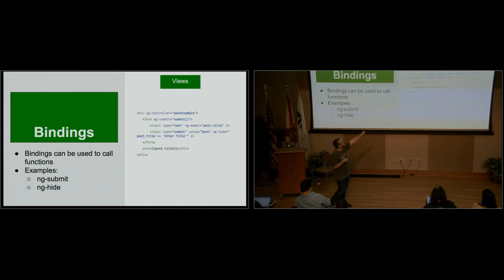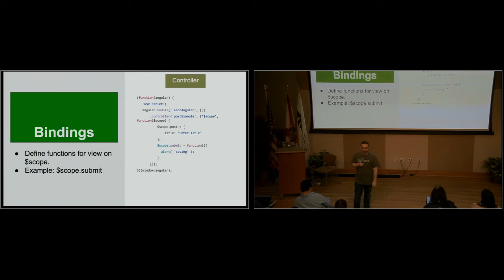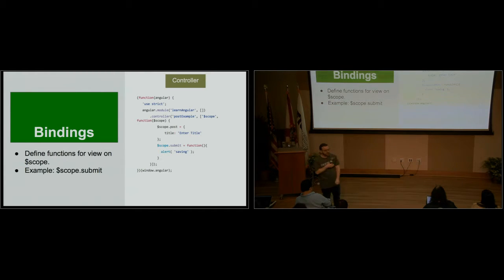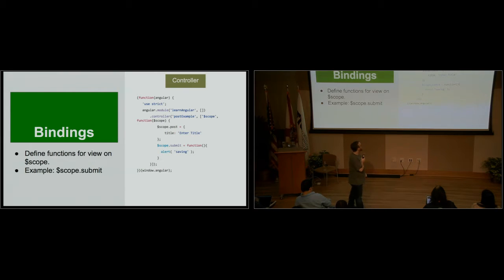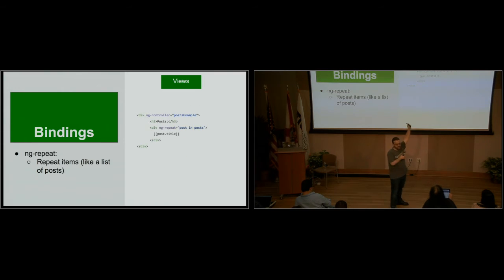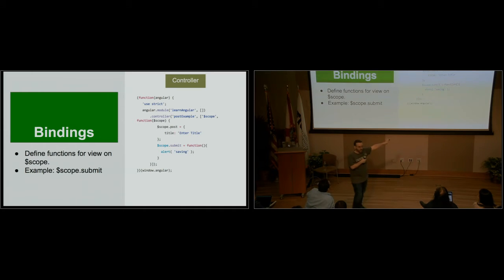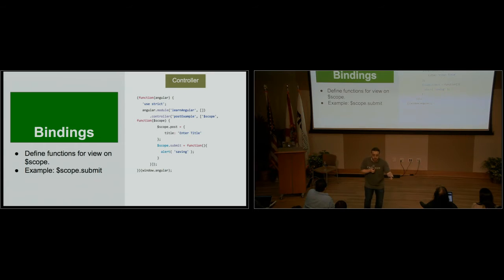So this is my view, and this is my updated controller for that view. Remember we added that submit. I don't need to do anything for that hide — Angular handles all that; there's no logic for that here. Same scope.post equals title. And then scope.submit equals a function — for now, let's just say alert 'saving.' This function will be executed when you click submit. But we can put an HTTP request back to the server there.